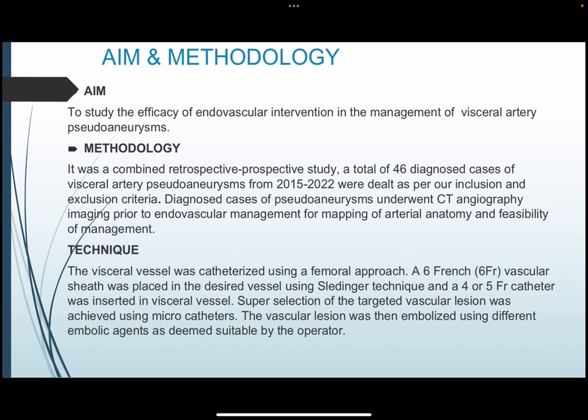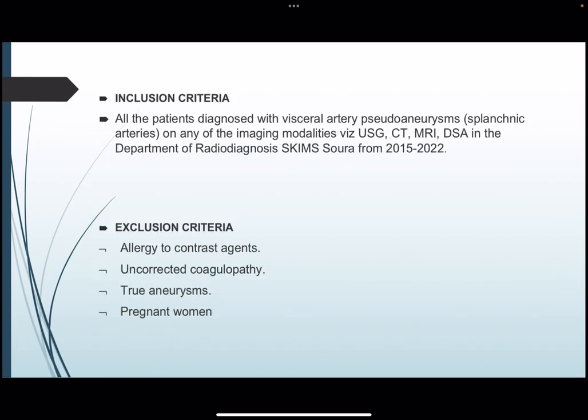Regarding technique, the visceral vessel was catheterized using a femoral approach. A six French vascular sheath was placed using the Seldinger technique, and a four or five French catheter was inserted into the visceral vessel. Superselection of the target vascular lesion was achieved using microcatheters. The vascular lesion was then embolized using different embolic agents as deemed suitable by the operator.